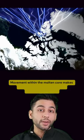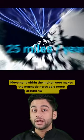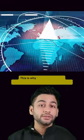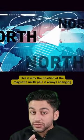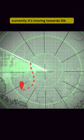Movement within the molten core makes the magnetic north pole creep around 40 km a year. And this is why the position of magnetic north pole is always changing and currently it is moving towards Siberia.